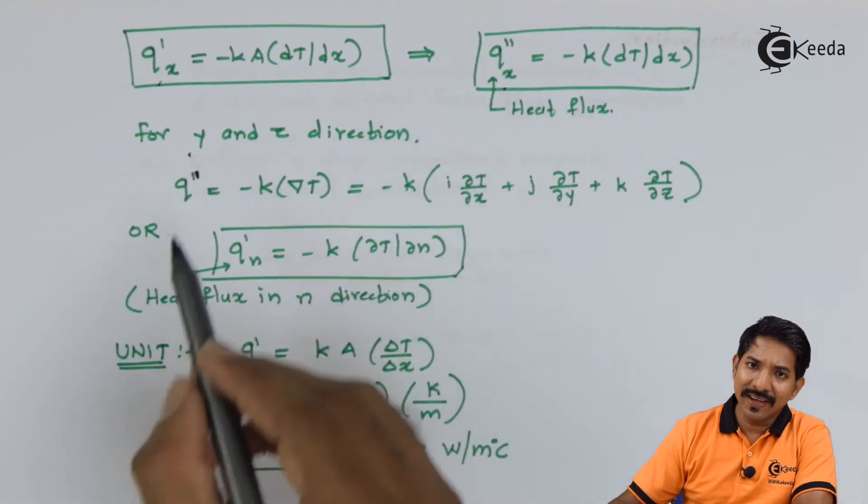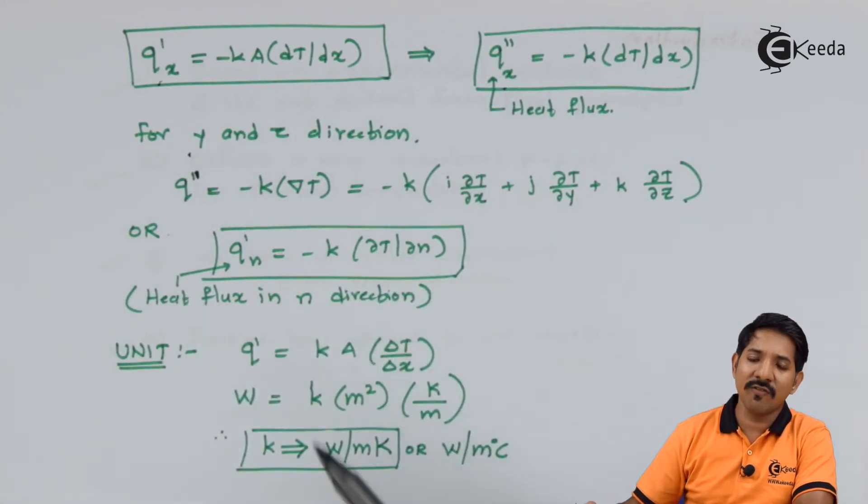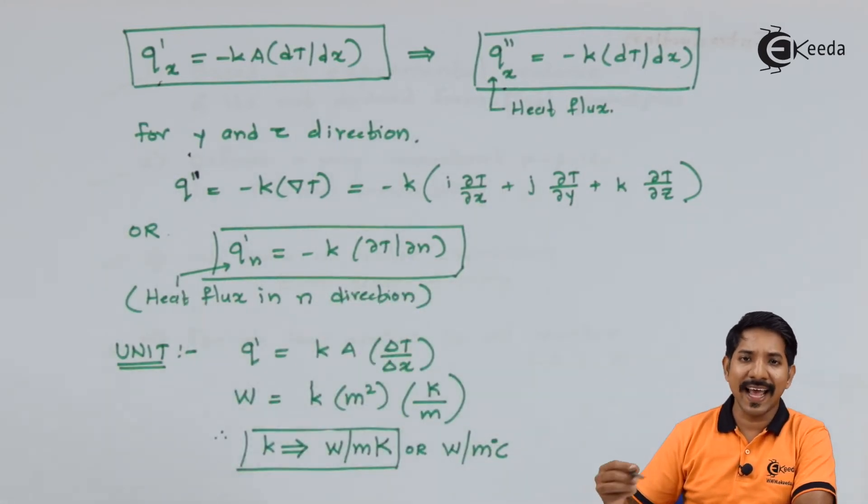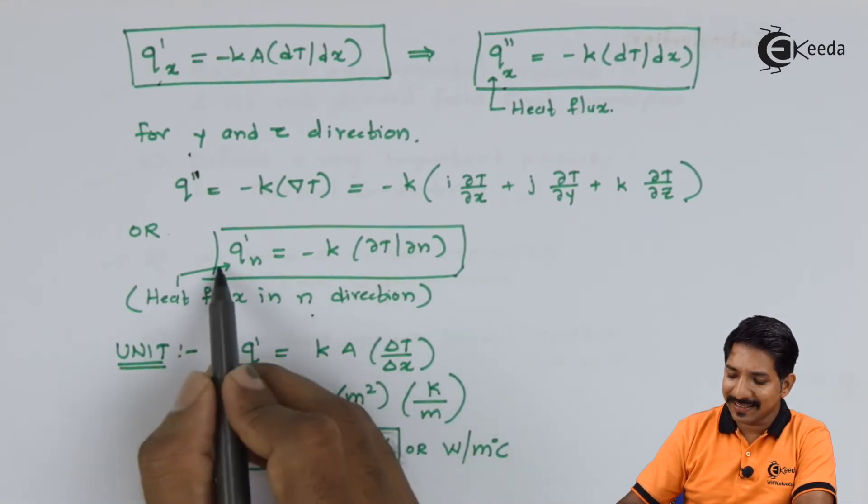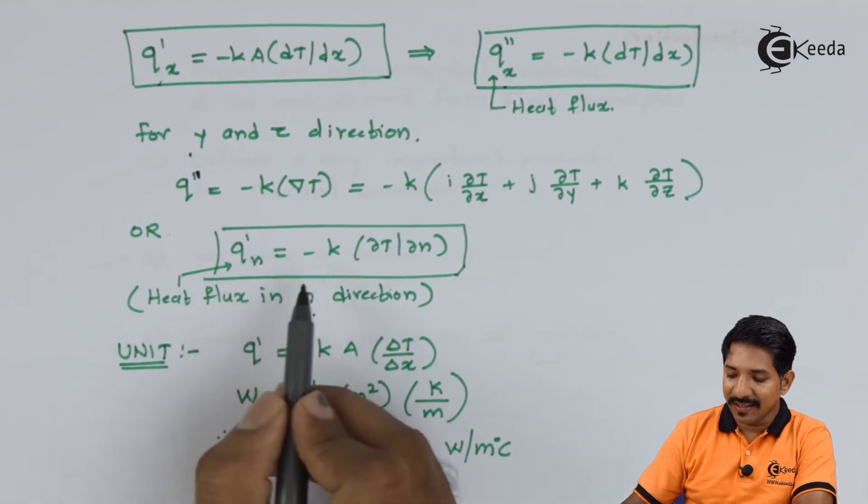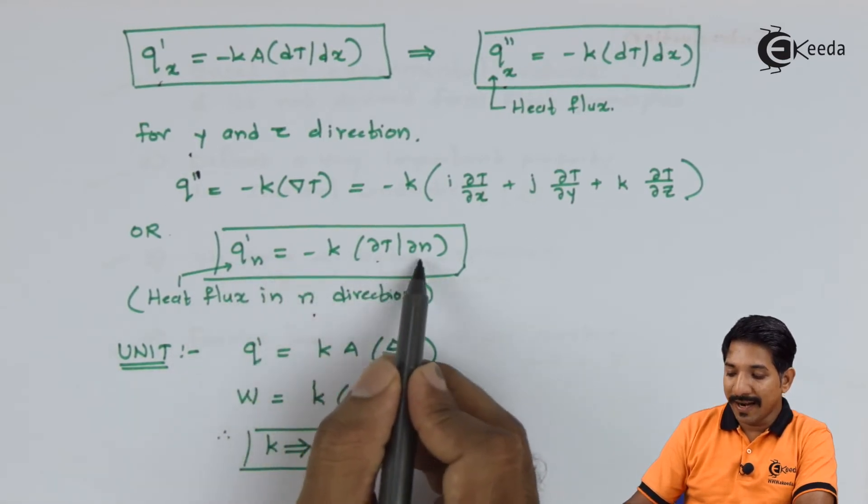Similarly this is given in case of Cartesian coordinates. If I want to explain that in any random n direction, I can say that heat flux in n direction can be written as Q''n equal to minus K partial T by partial n.